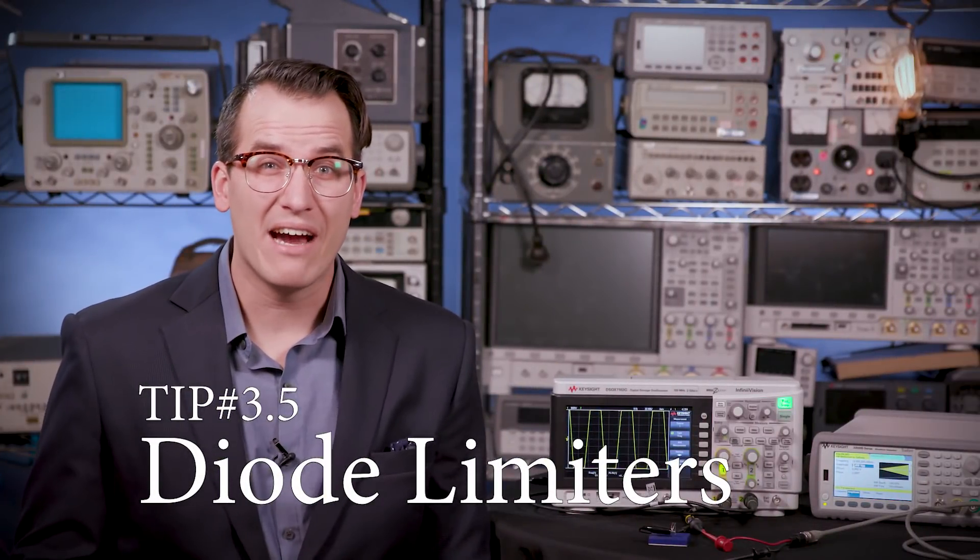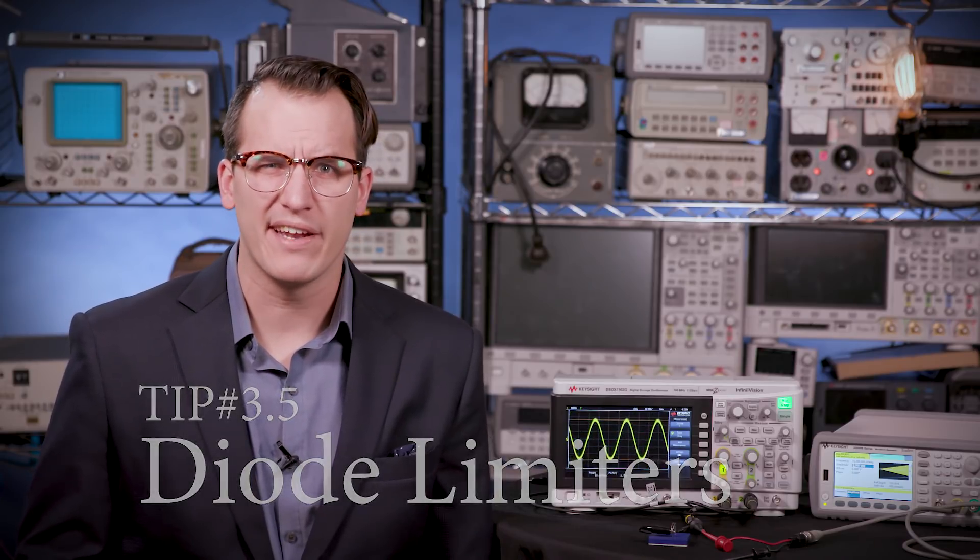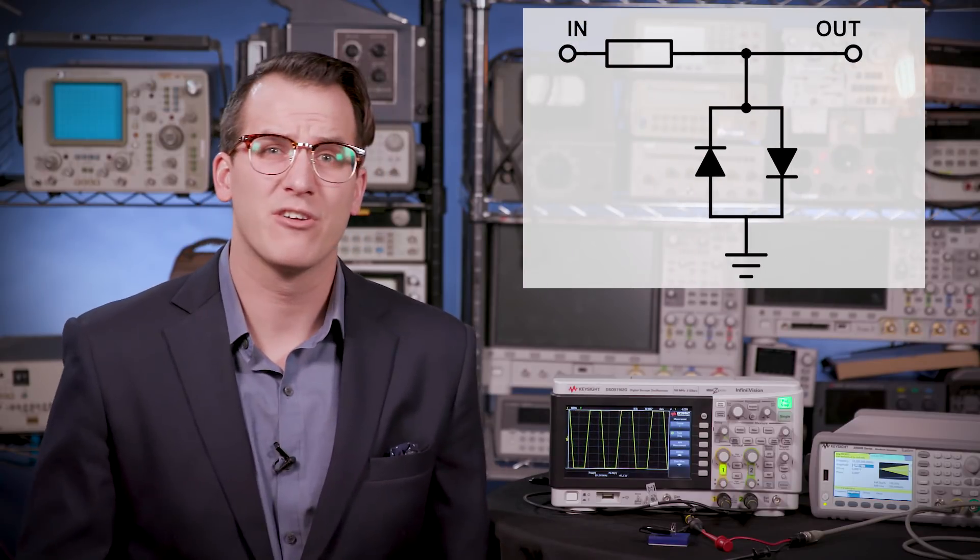Diode limiters. I'm only counting this as half of a use because it technically falls under clamping, but it is different enough to warrant that extra 0.5. Limiters, sometimes known as clippers, are a special type of clamp that limit the output to plus or minus the forward voltage with a setup like this, which can be used to help protect high gain amplifiers or other sensitive circuitry from saturating.